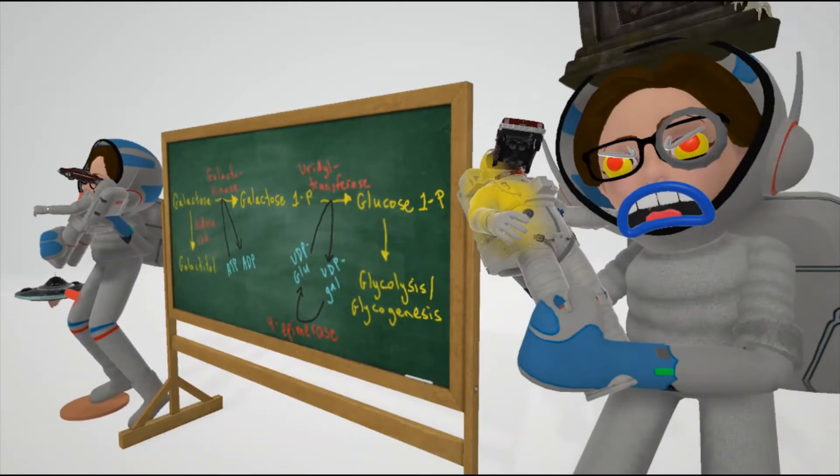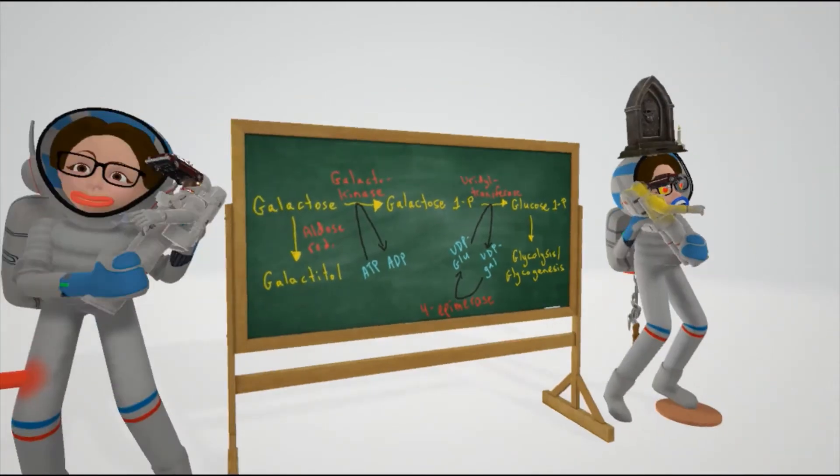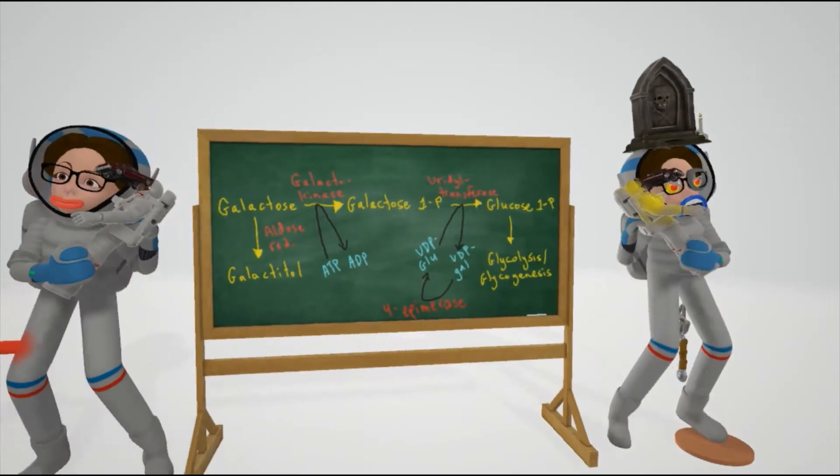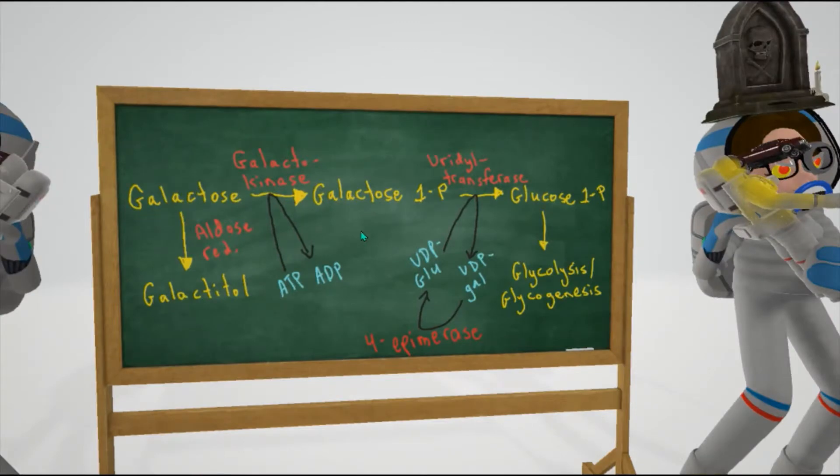who represents classic galactosemia. Let's talk about galactokinase deficiency. Looking at the board, these teachers are teaching the equation of galactose metabolism. Normally, galactose is converted to galactose 1-phosphate, which is then converted to glucose 1-phosphate for glycolysis or gluconeogenesis.